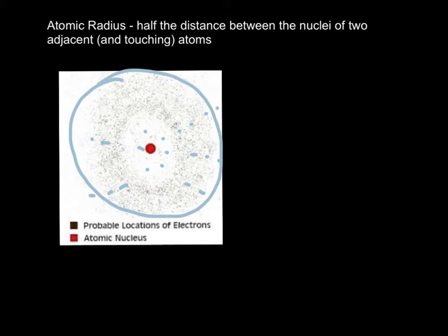So instead, the atomic radius is half the distance between the nuclei of two adjacent and touching atoms. Well, what does that mean?